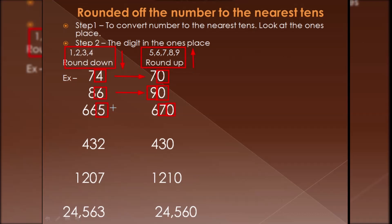Next, again we have a three-digit number: 432, rounding to the nearest tens. The tens place is 3 and the one's place is 2, which is less than 5. Since it is less than 5, the tens place remains as it is and the one's place becomes zero. So 432 is rounded down to 430.